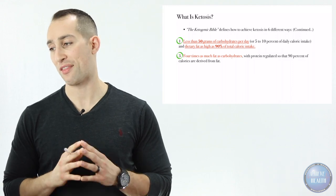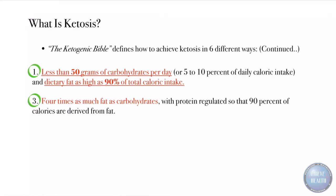The two definitions that you're going to put down right now are number one and number three: less than 50 grams of carbohydrates per day and dietary fat as high as 90 percent of total caloric intake, and four times as much fat as carbohydrates with protein regulated so that 90 percent of calories are derived from fat.